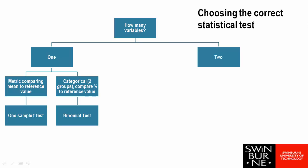If we have two variables, they could be both metric or they could be both categorical, or we could have one metric and one categorical. If we have one metric variable and we have one categorical variable and that categorical variable just has two groups, we have two different options.